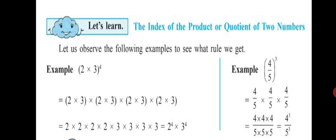This equals all the 2s written together: 2 × 2 × 2 × 2, multiplied by all the 3s together: 3 × 3 × 3 × 3. This equals 2 raised to the power of 4, since 2 is multiplied 4 times, into 3 raised to the power of 4, since 3 is also multiplied 4 times.